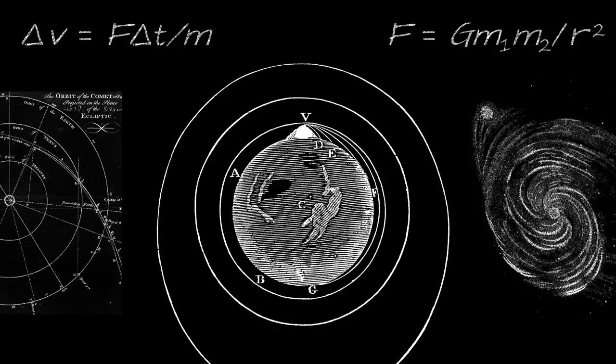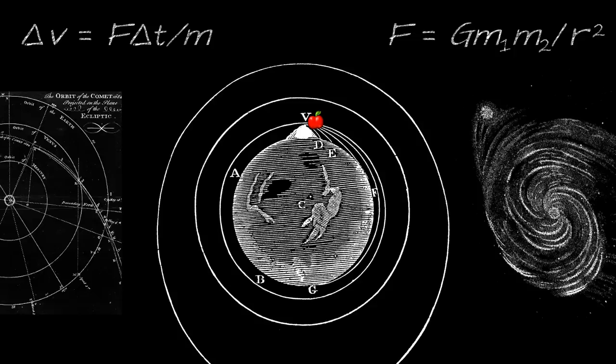Contrary to what the first physicists believed, the same physics applies to the falling of an apple and to the motion of the moon. There is one universal physics, and it is valid throughout the observable universe.